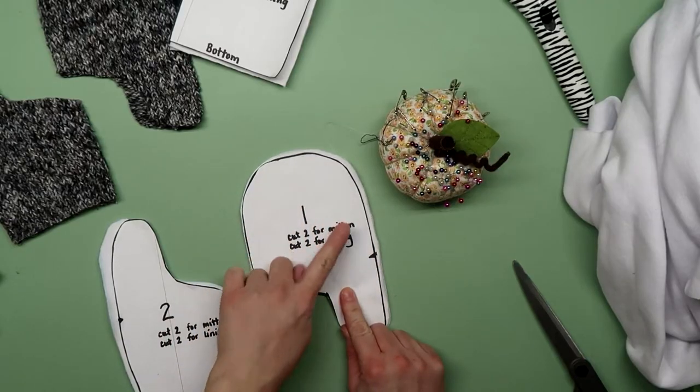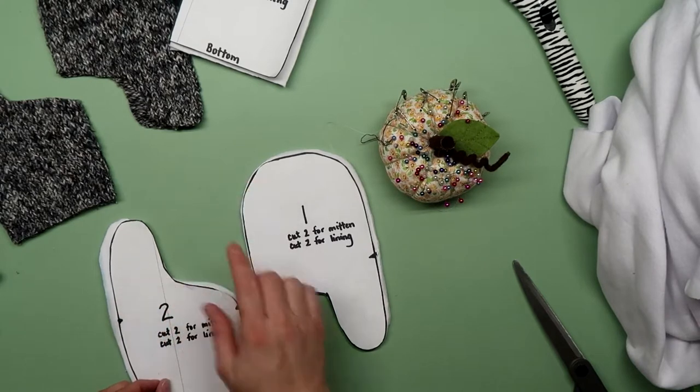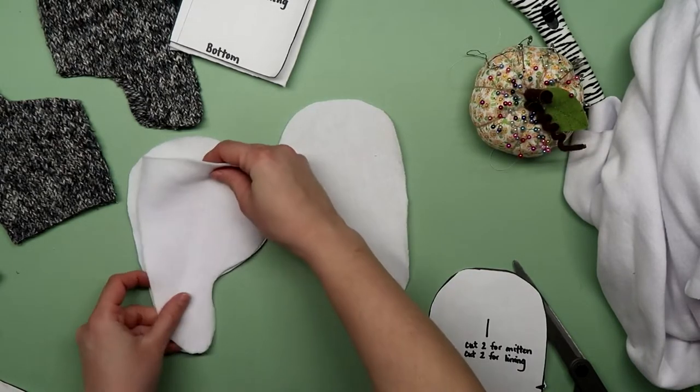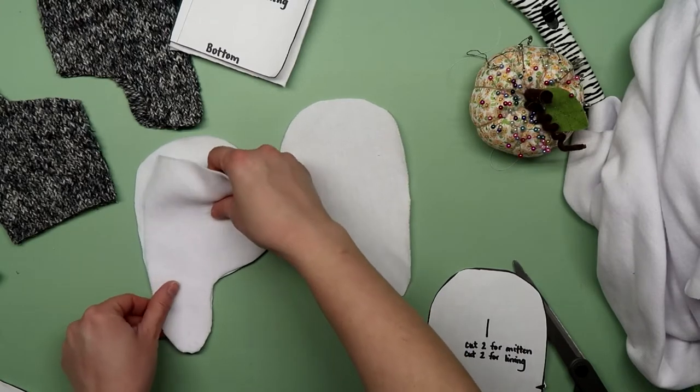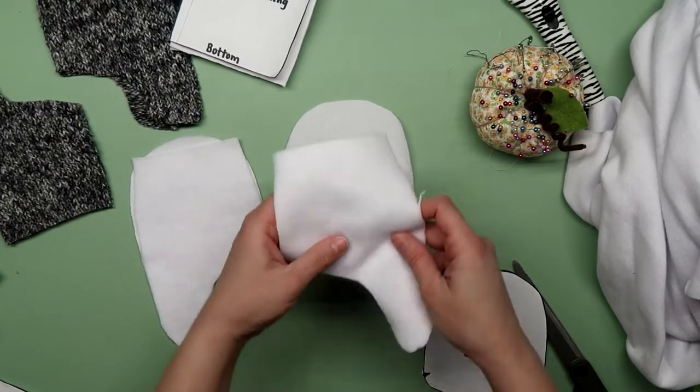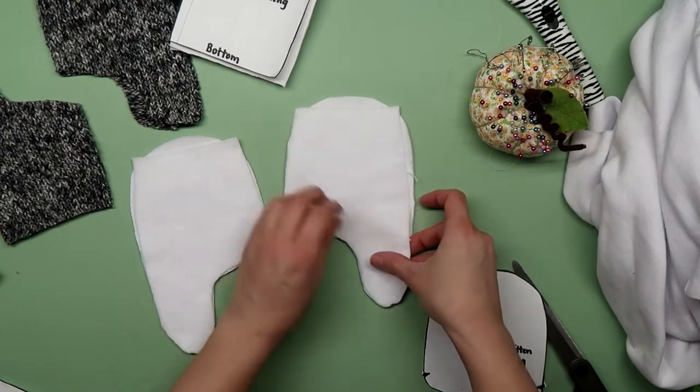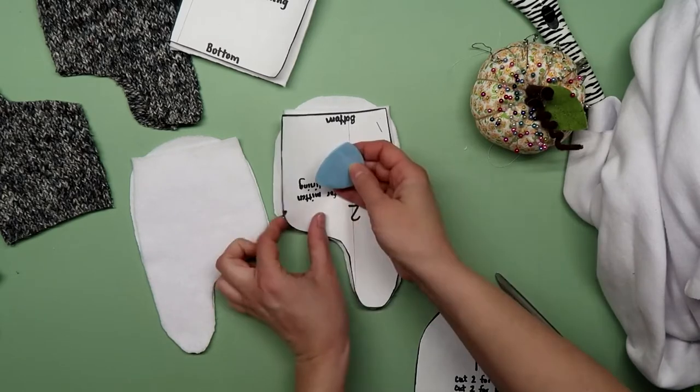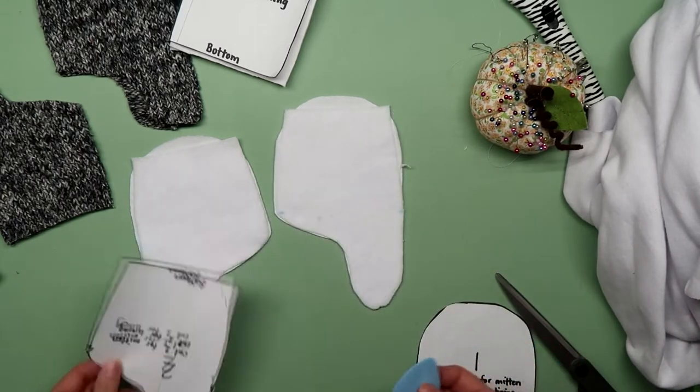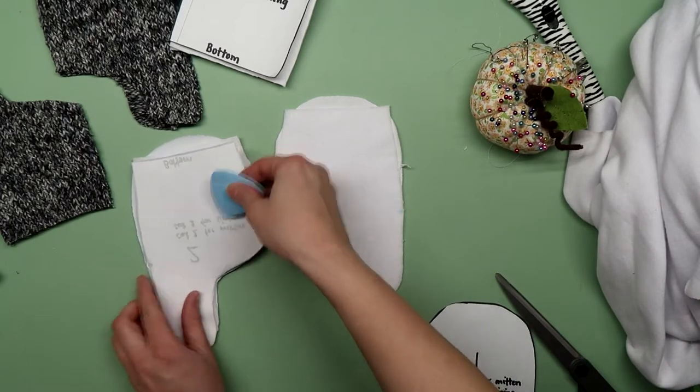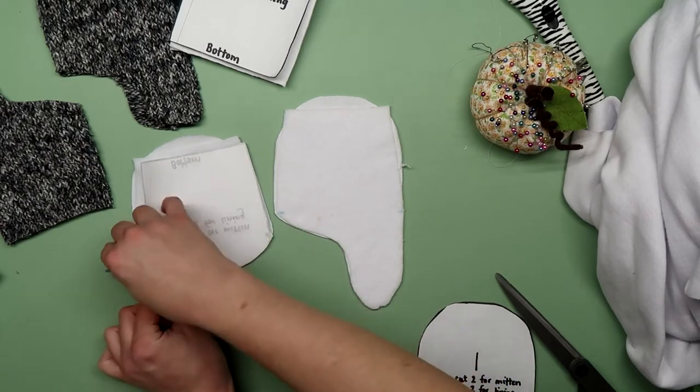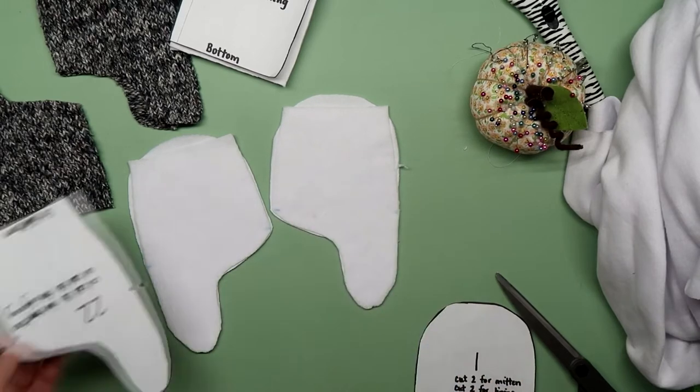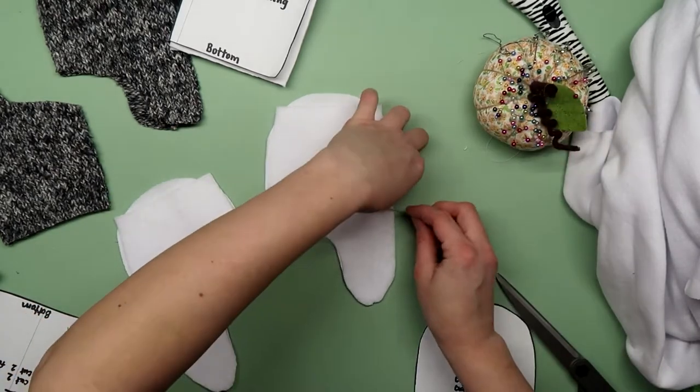Piece one is where the fingers go and piece two is for the thumb. Lay piece two right side together with piece one matching up the thumbs. Then I'm going to mark where the dots are on the pattern. Put some pins to help you see it better.